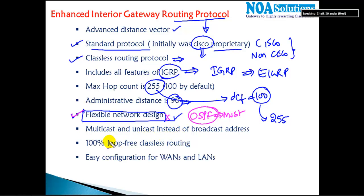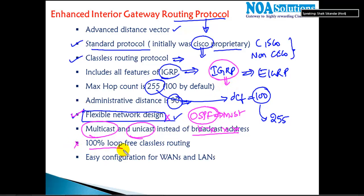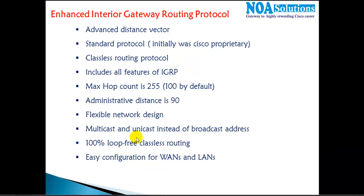There are no more broadcast messages in EIGRP. It uses multicast and unicast messages instead of broadcasting, unlike RIP version 1 and IGRP which used broadcast. EIGRP supports multicast, it's 100% loop-free, and it's very easy to configure. These are the features that make EIGRP a better protocol when you compare it with previous protocols.